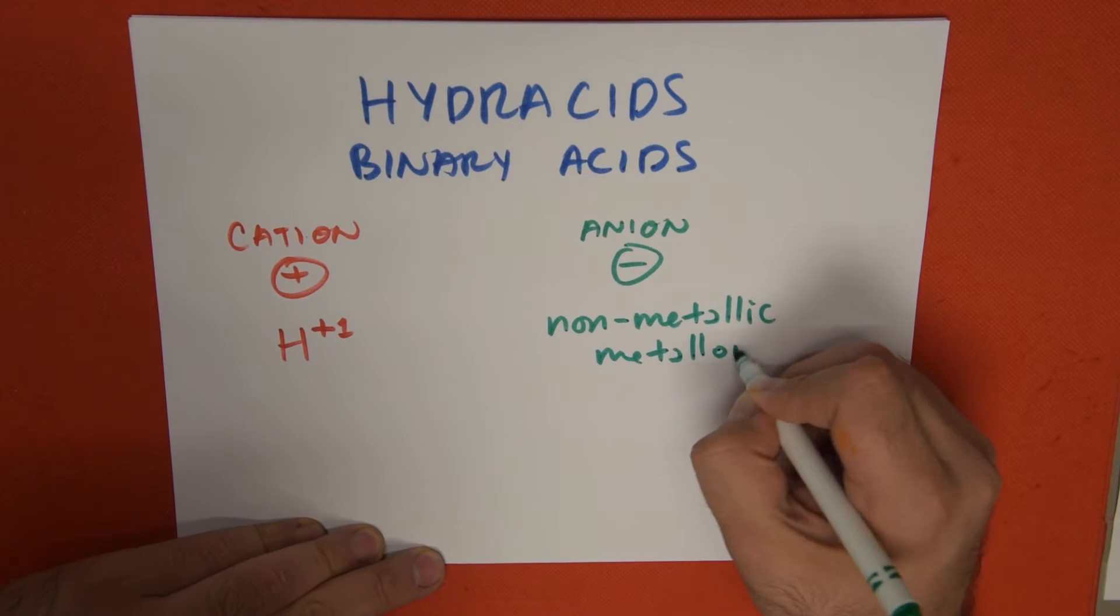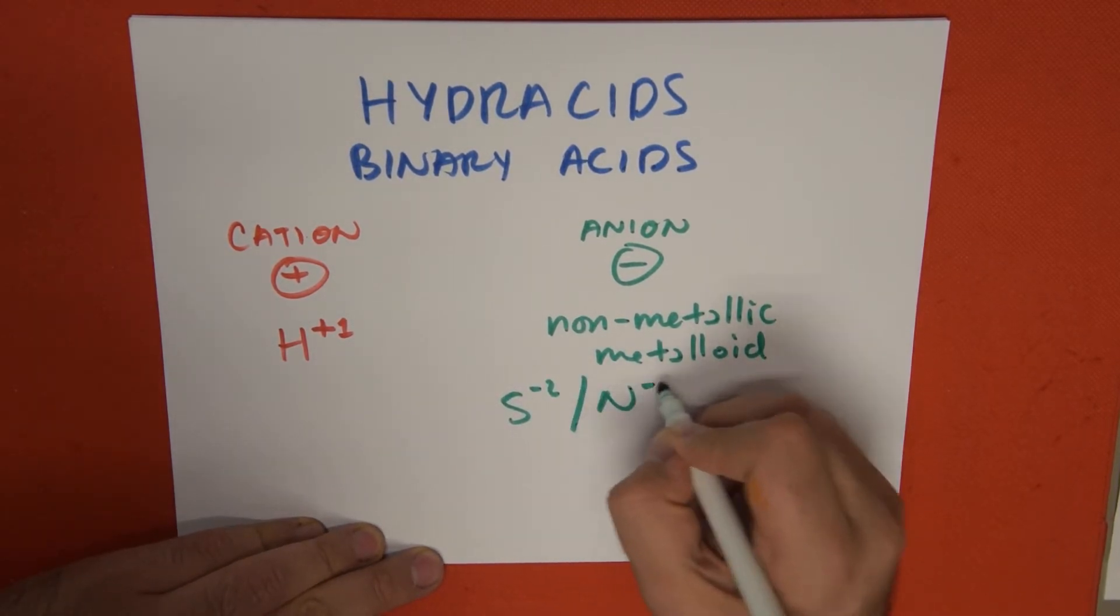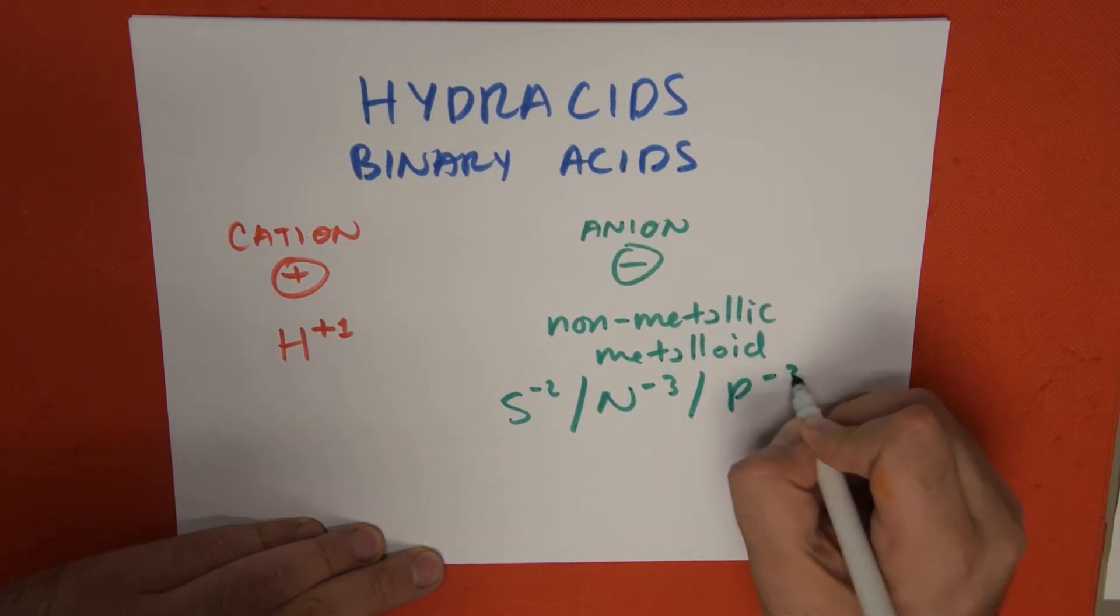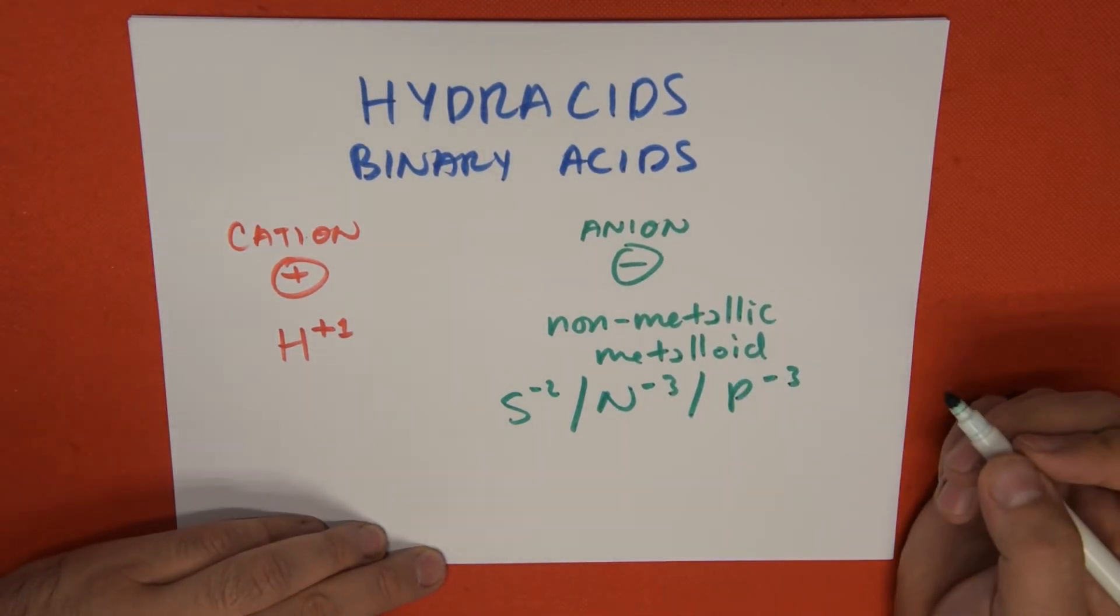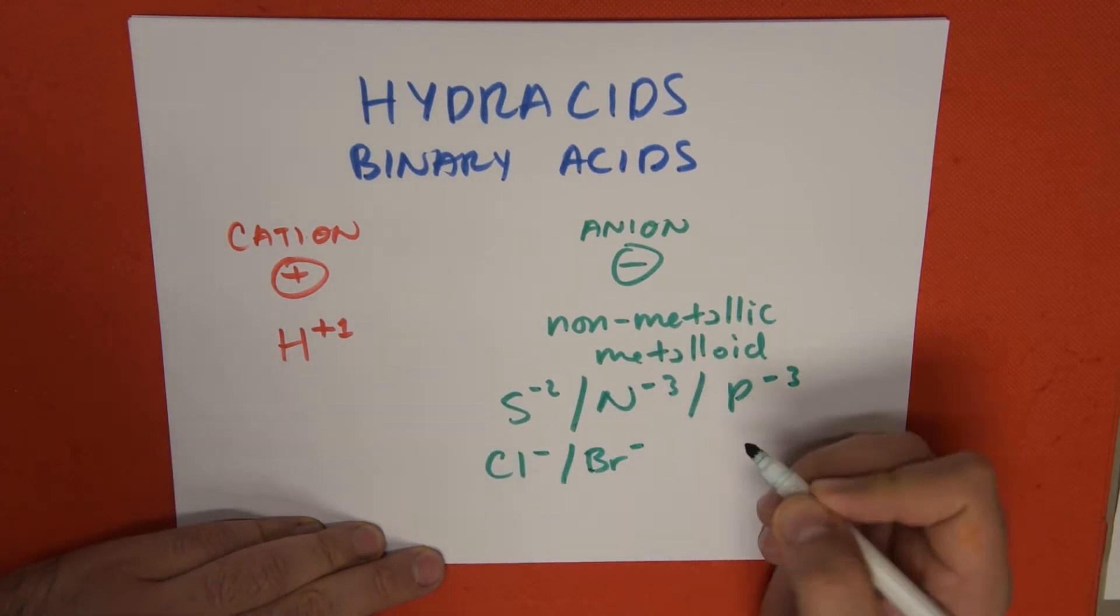Some examples are sulfur with a minus two charge, nitrogen with a minus three charge, phosphorus with a minus three charge, or some halogens like chlorine, bromine,